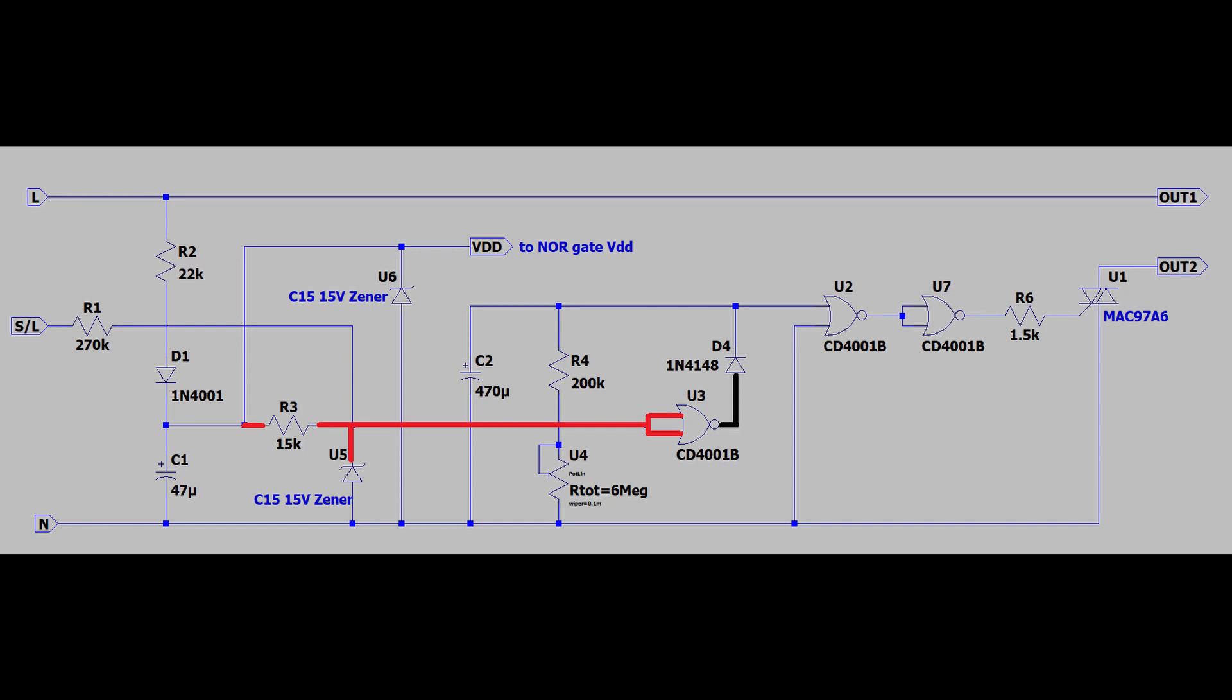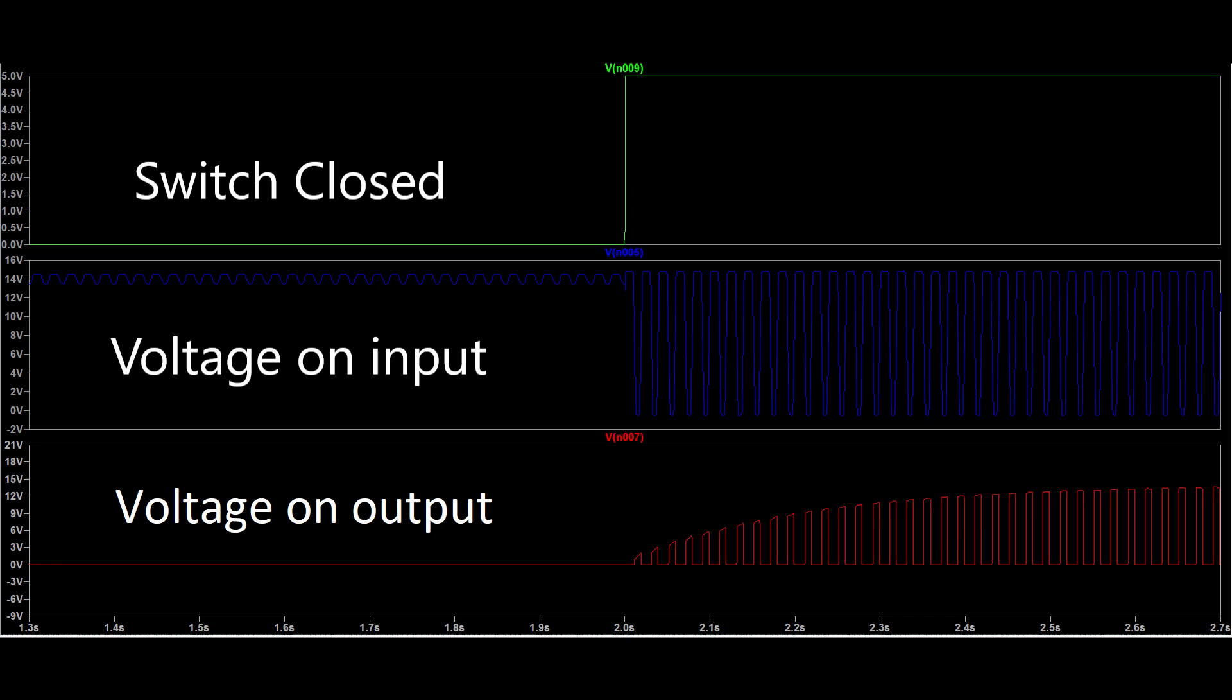When the switch is closed, mains voltage is introduced to the 15V DC on the input. The negative cycle of the wave subtracts from the 15V, pulling the NOR gate input towards 0V. This turns the output of the gate high. You can see from the simulation that this only happens on every negative cycle.